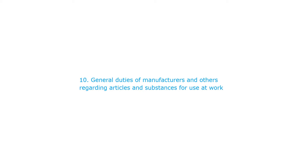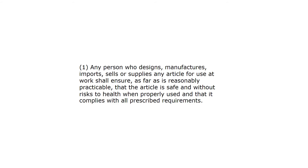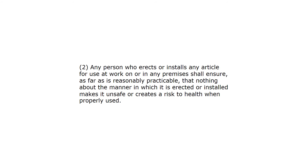General duties of manufacturers and others regarding articles and substances for use at work. Any person who designs, manufactures, imports, sells or supplies any article for use at work shall ensure, as far as is reasonably practicable, that the article is safe and without risks to health when properly used, and that it complies with all prescribed requirements. Any person who erects or installs any article for use at work on or in any premises shall ensure, as far as is reasonably practicable, that nothing about the manner in which it is erected or installed makes it unsafe or creates a risk to health when properly used.